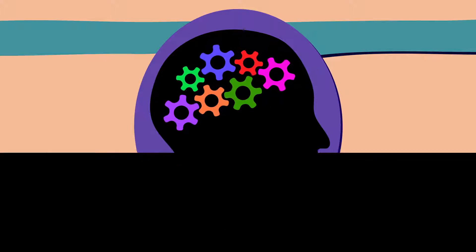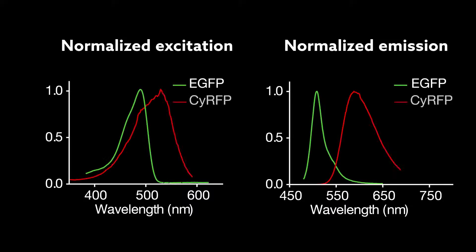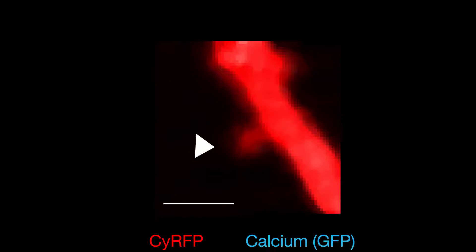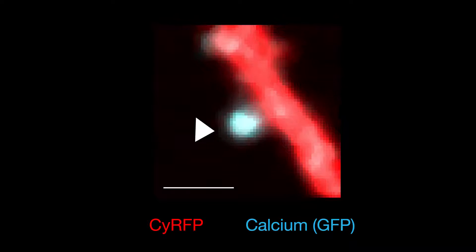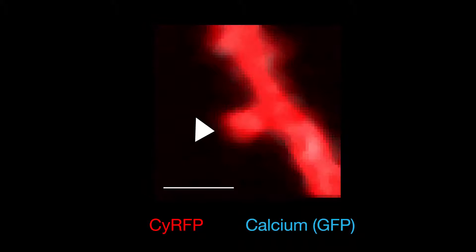To expand their options, the team developed a new red fluorescent protein named CyRFP that can be visualized at the same time as GFP. They then tested whether it would be useful as a structural marker while using a GFP-based sensor to monitor calcium flow.